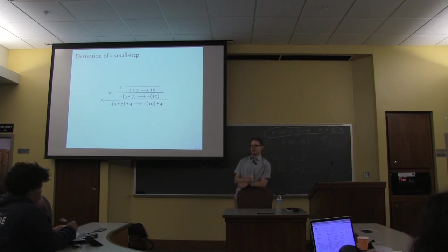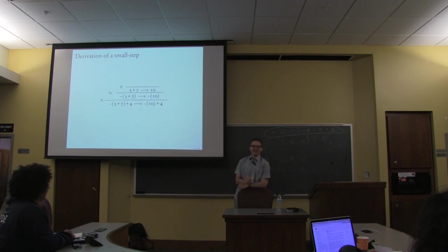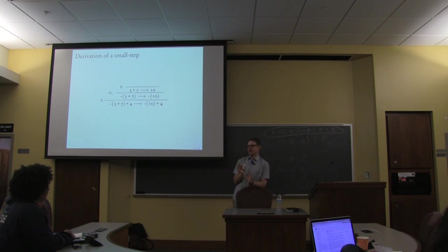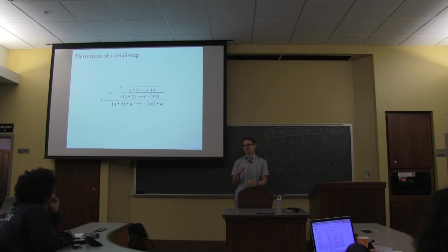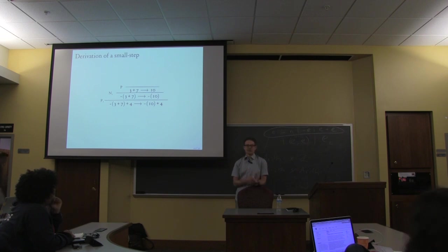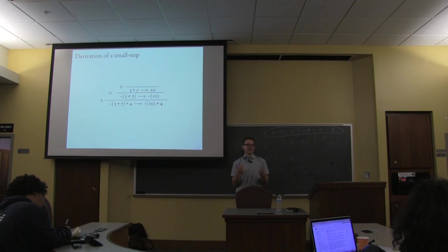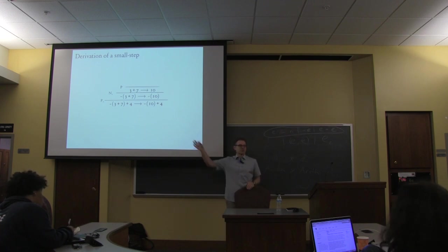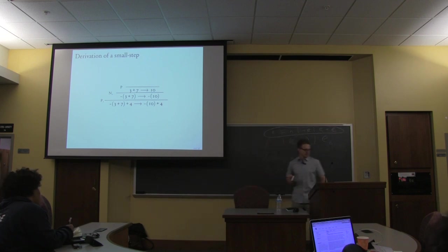If you're an efficiency-minded programmer you might think this is horrific — and yes, you'd never implement an interpreter as if it was a small step semantics. This is just about specifying the behavior of your language; the implementation would look very different. Some people think they should make their specification more efficient — but when someone says that, I think: that's not a good property to require of your specification. Your specification should be easy to understand, precise, and easy to understand. How big the derivations are doesn't matter — you do proofs about these things, you don't actually build them.